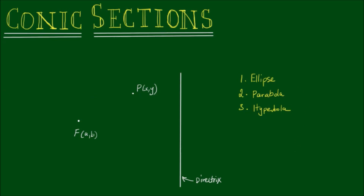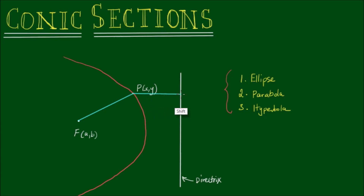The locus, or the path that this point P will follow, is going to form one of these three conic sections. It all depends on the ratio between the focus to point P, and the perpendicular distance from P to the directrix, as to the shape of the locus. The distance from the focus to point P is Pf, and the distance from P to the directrix is Pd. The ratio between Pf and Pd is called the eccentricity.